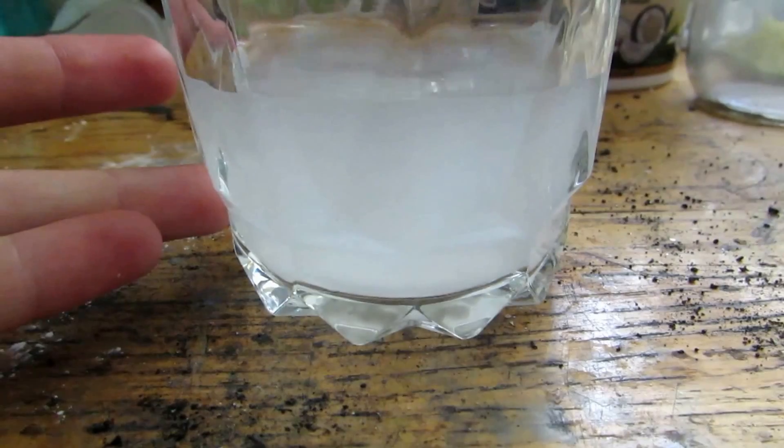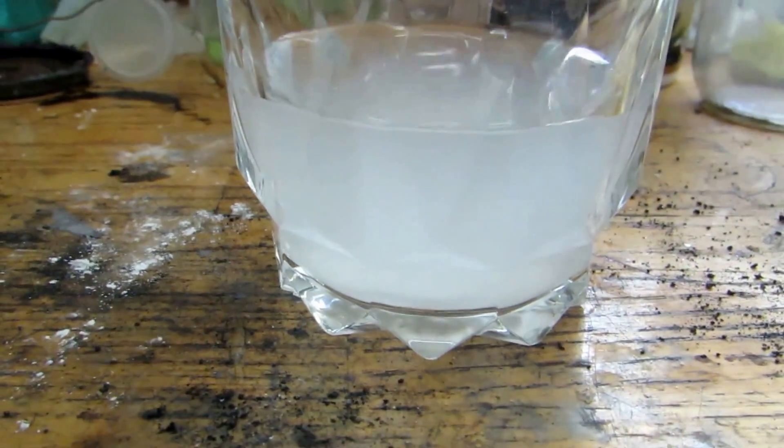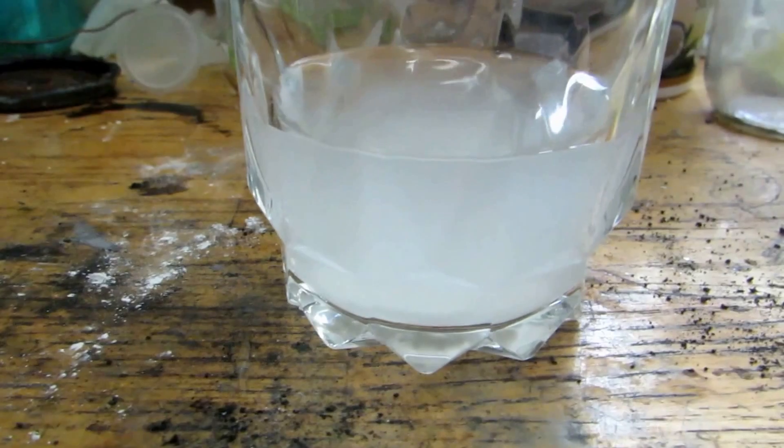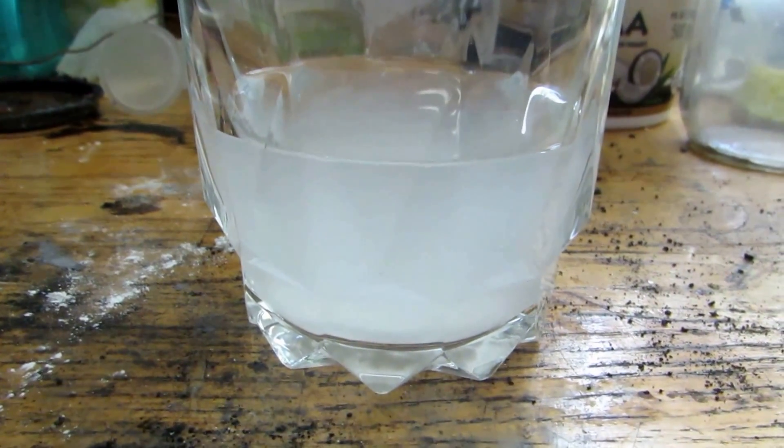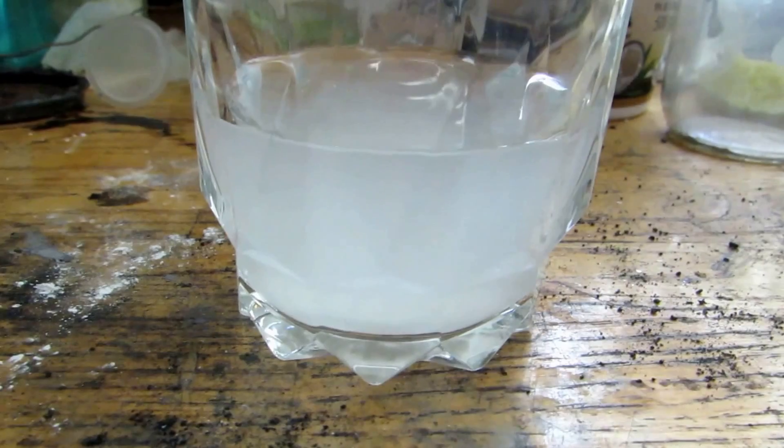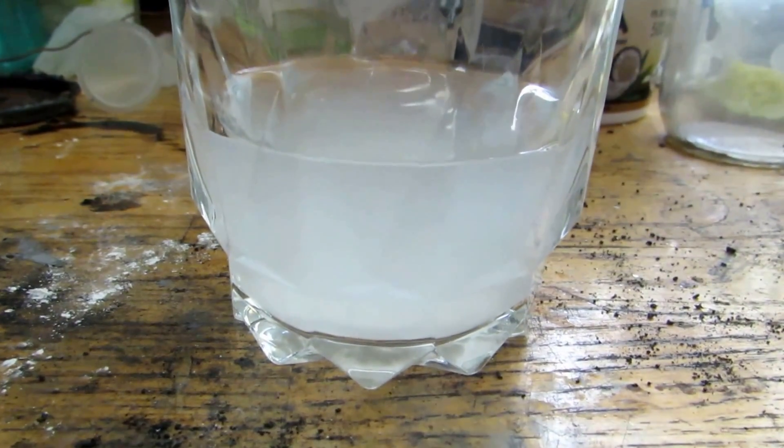But first we're going to filter off whatever's insoluble here. Then we'll be left with our solution of pretty much mainly just strontium chloride, which is what I'm hoping. Then we'll be able to boil that down and get the pure crystals. So I'm going to try to do that and I'll be right back.